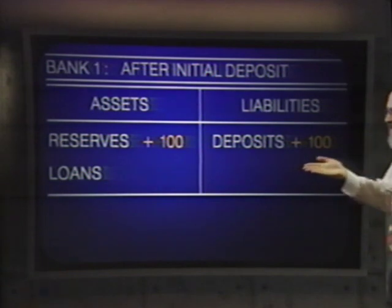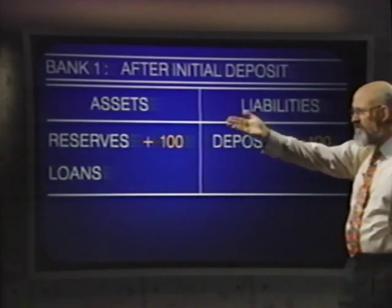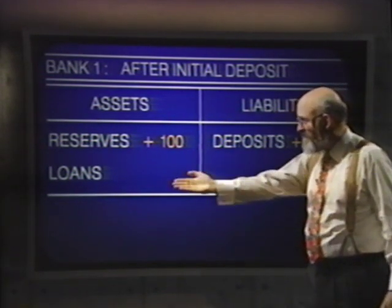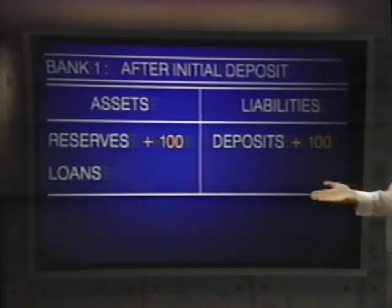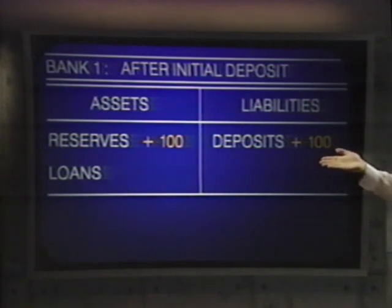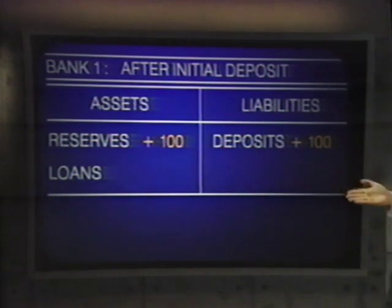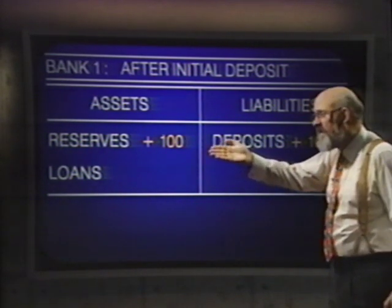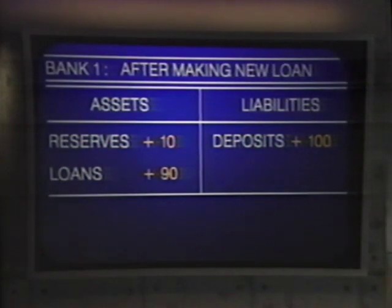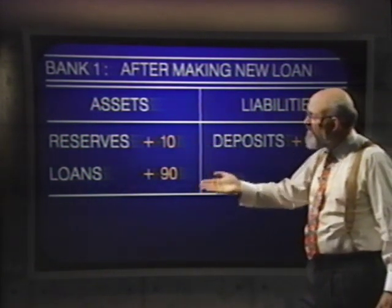Suppose a new $100 bill is printed and given to you as part of your student loan. You pay a typist for your economics essay, and the typist deposits $100 in bank number one. That bank now has $100 more in reserves and $100 more in deposit obligations. But it's holding reserves on a one-for-one basis when it only wants a one-for-ten ratio. To earn more profits, the bank will grant new loans equal to $90 of that $100, keeping only $10 as reserves.